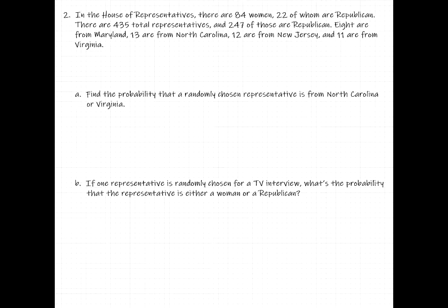In the House of Representatives there are 84 women, 22 of whom are Republicans. There are 435 total representatives, 247 of whom are Republicans. 8 are from Maryland, 13 from North Carolina, 12 from New Jersey, and 11 are from Virginia. That's a lot of information, and we have two problems — in both cases we're looking for probabilities.